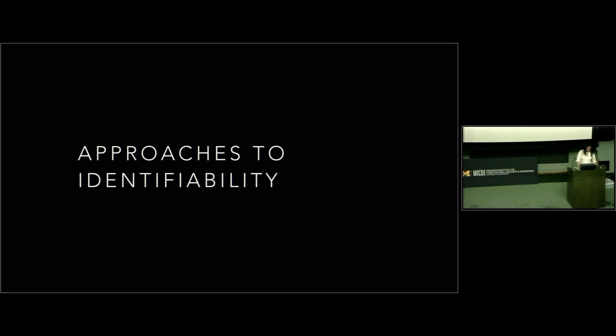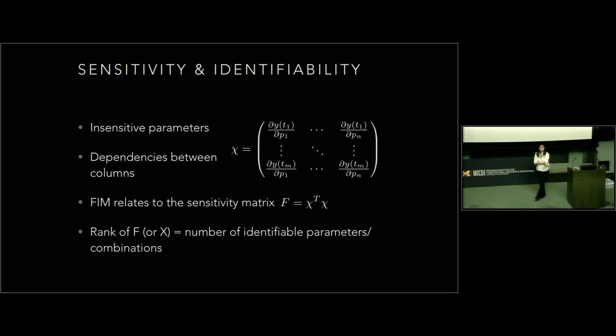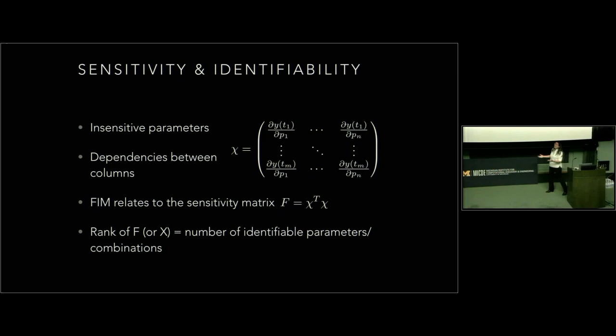I want to talk about a couple of different approaches to identifiability. The first is sensitivity analysis, which most people are familiar with. If your parameter is insensitive, it's definitely unidentifiable — it doesn't do anything to your output. But it's not necessarily the case that a sensitive parameter is therefore identifiable. M1 and M2 could both be perfectly sensitive, but they can counterbalance one another and thus not be identifiable.